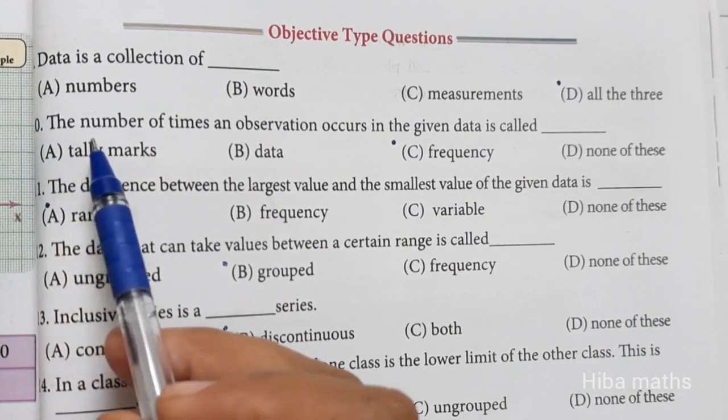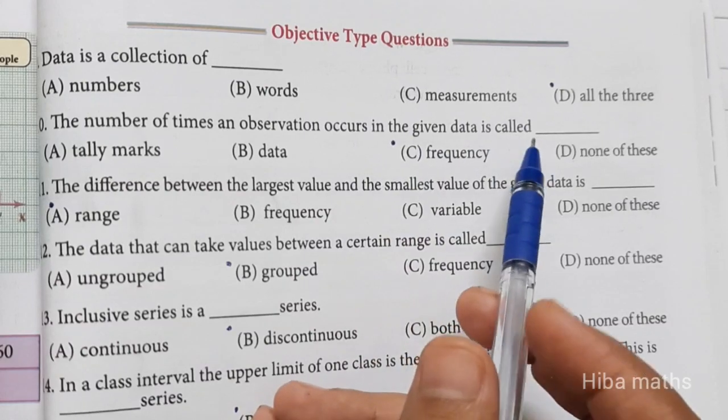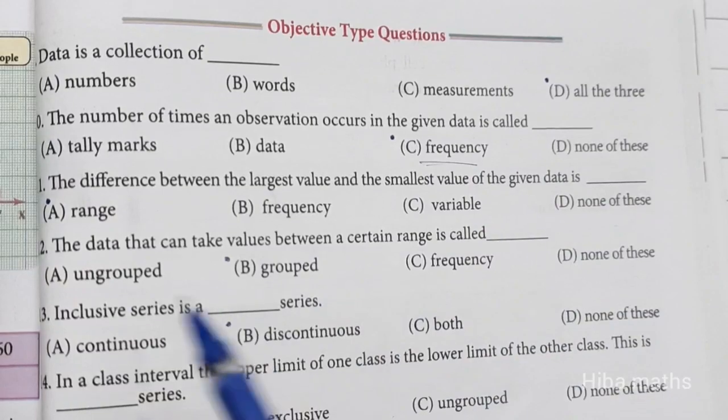Tenth question: The number of times an observation occurs in the given data is called, how much time is the frequency table? So frequency is the answer.